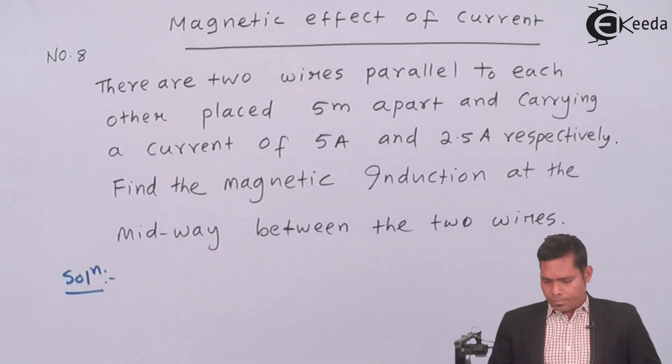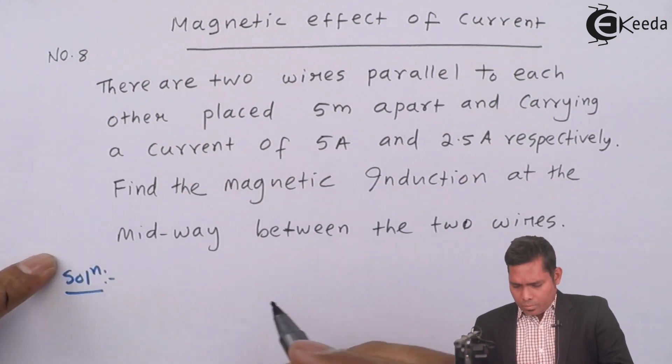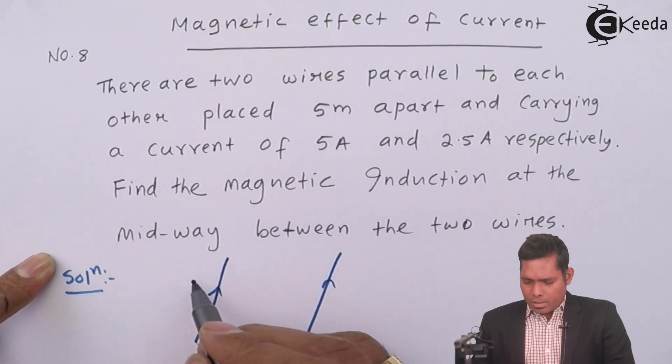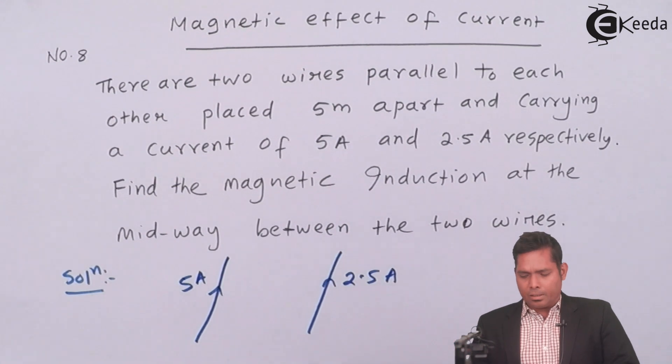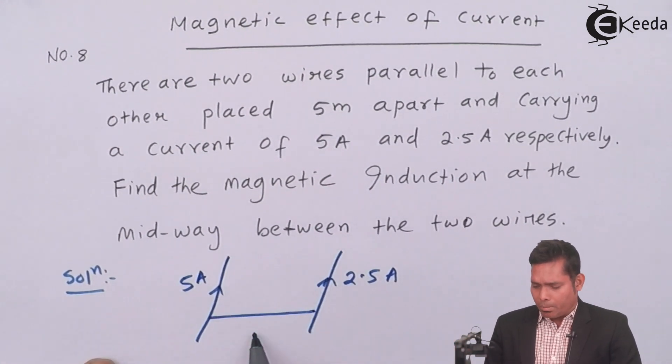Solution. First of all, these are two wires. This carries 5 ampere. This carries 2.5 ampere current. Both are in the same direction. The distance of separation between them is 5 meter.